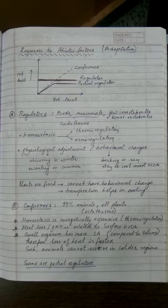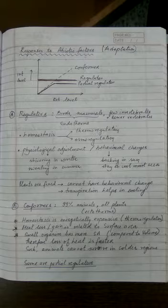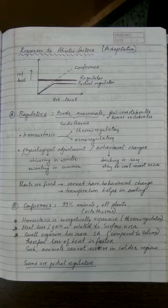Now in such organisms, why these organisms are still conformer? Because we can say through evolution organisms develop better adaptations. Why conformers are still conformers after so many years of evolution? Reason is that homeostasis is an energetically expensive process.